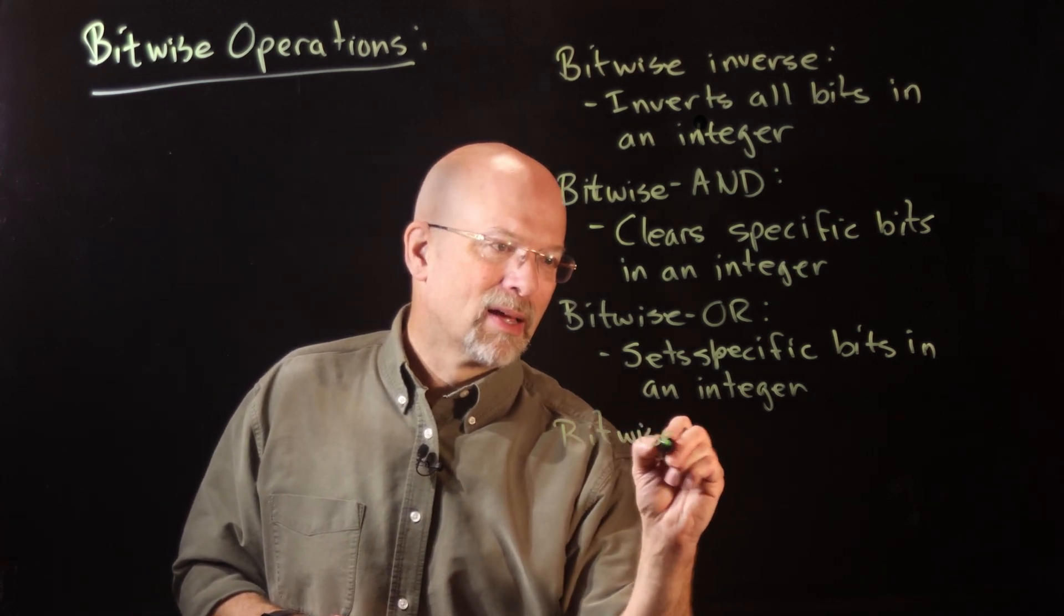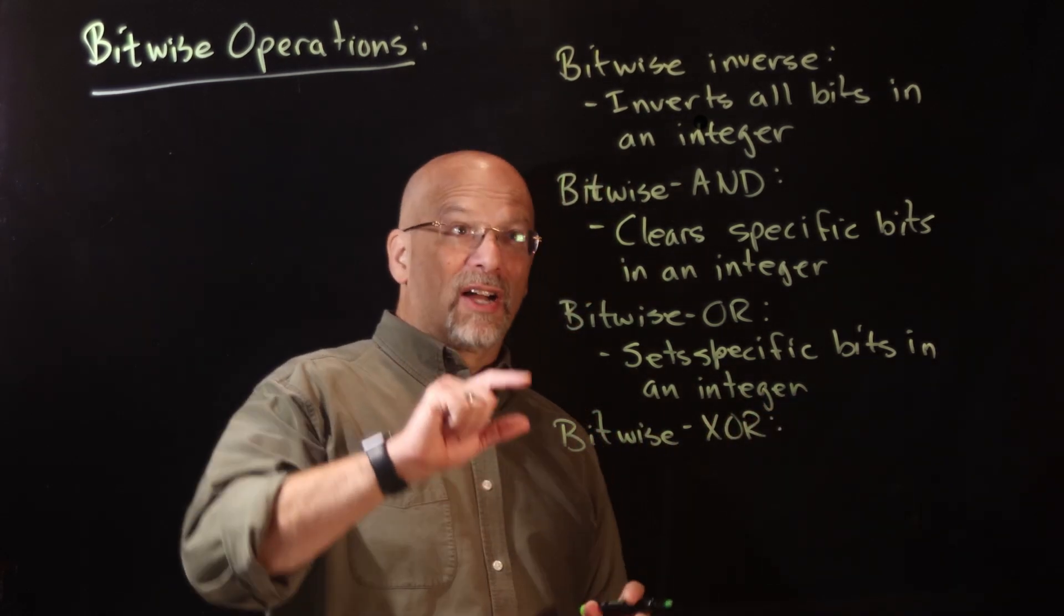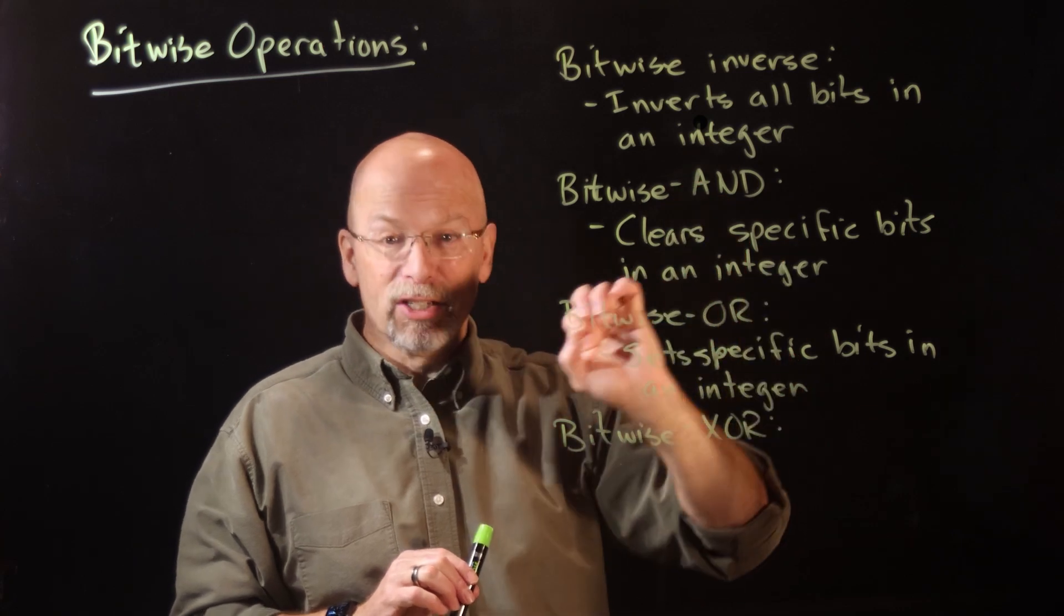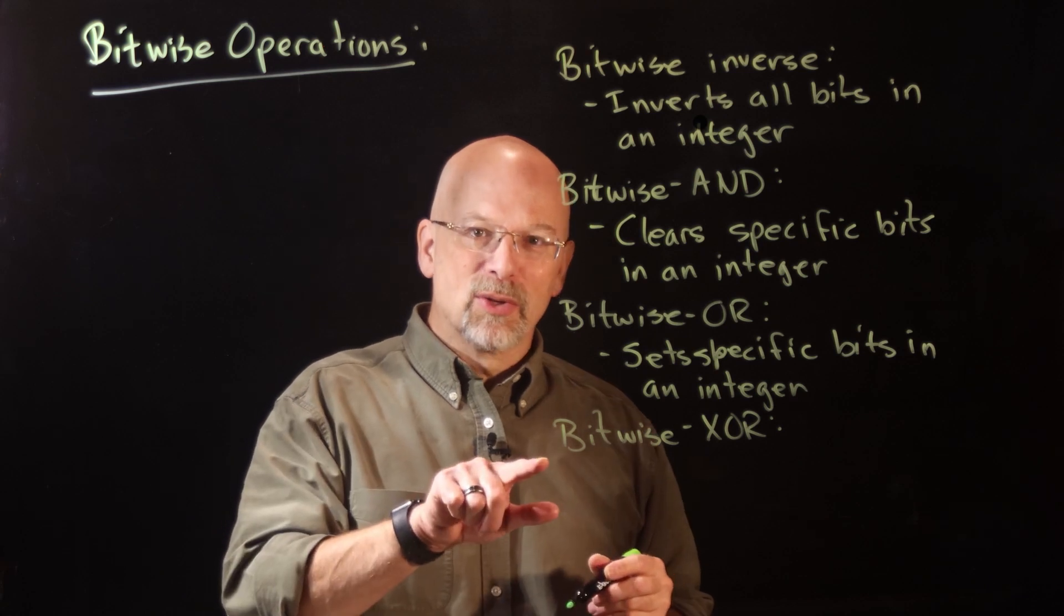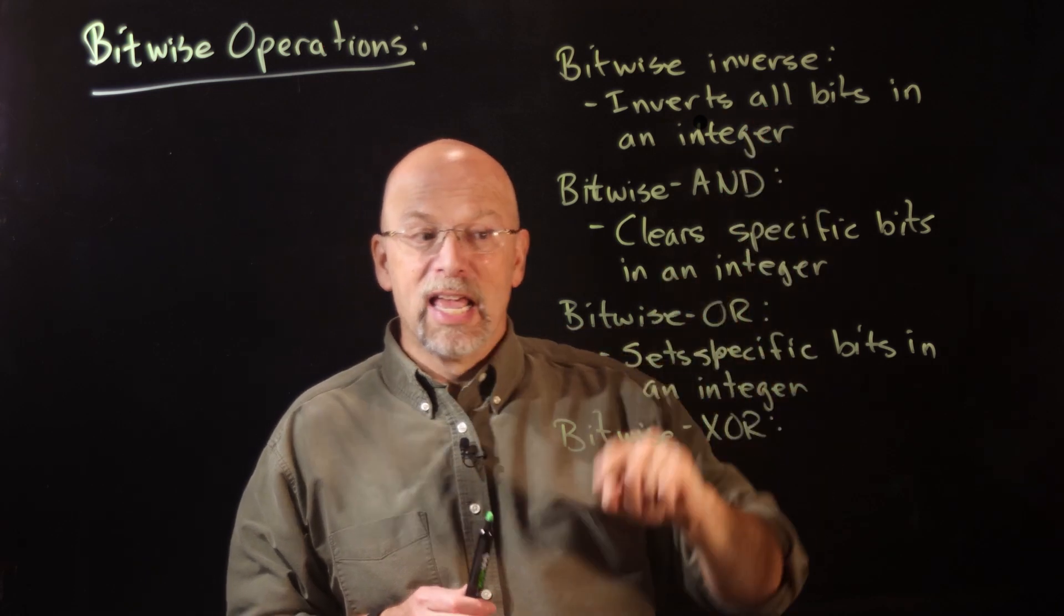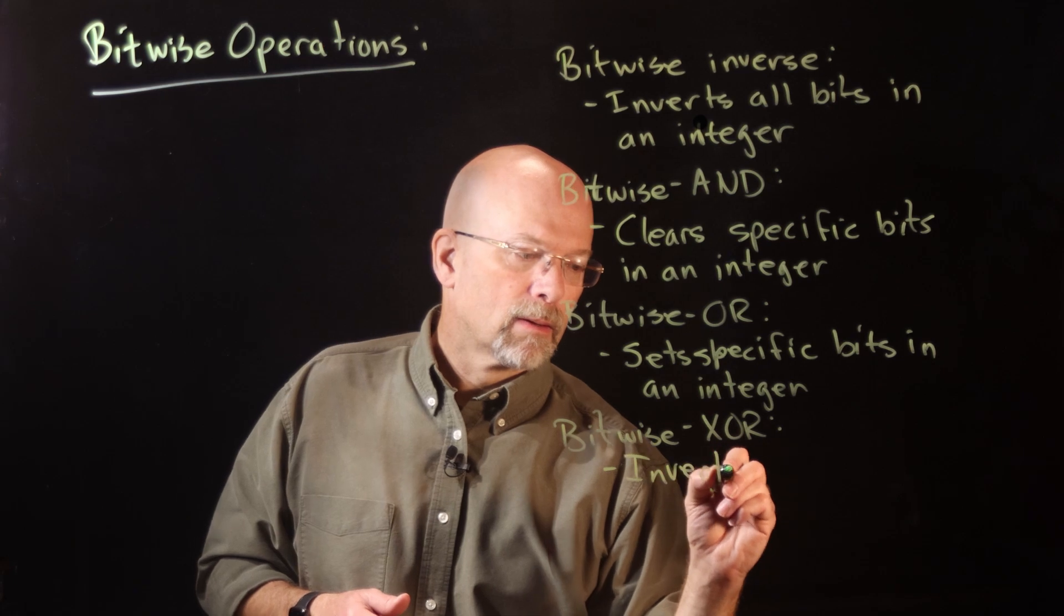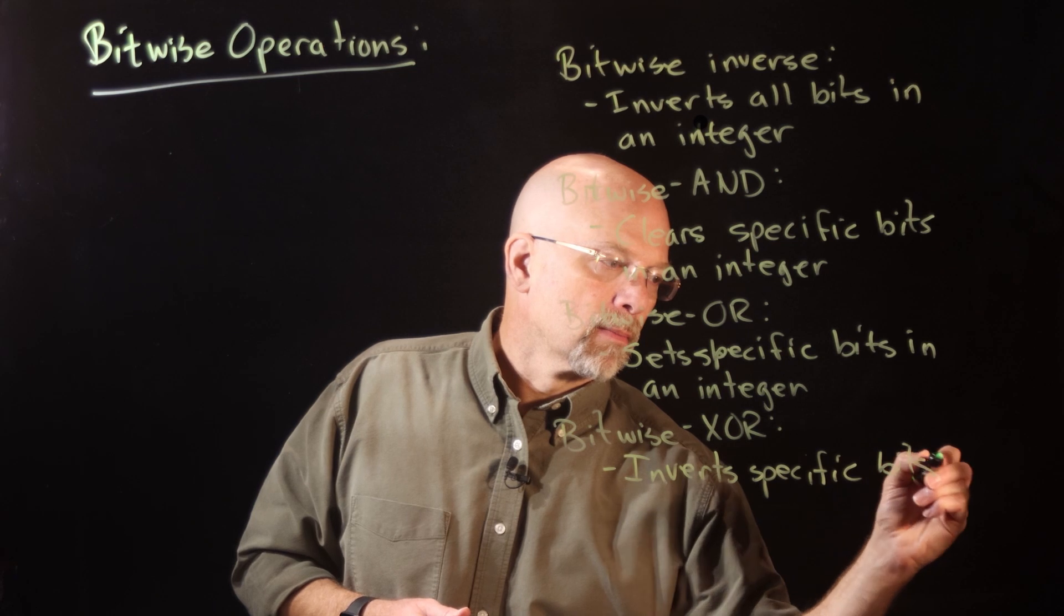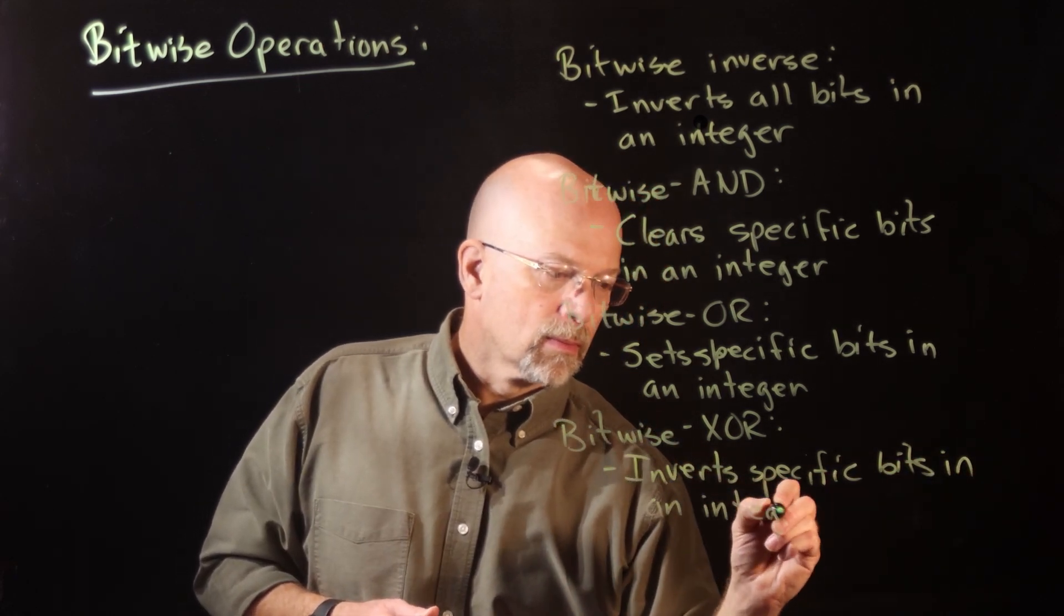There's a fourth one, bitwise exclusive or. I've already talked about inverting all the bits in an integer, clearing specific bits in an integer, setting specific bits in an integer. Bitwise exclusive or is a little bit like the bitwise inverse, except instead of inverting all the bits, it inverts specific bits.